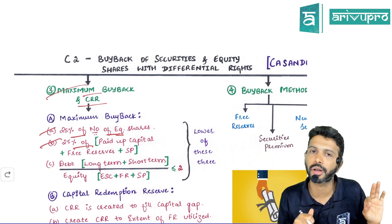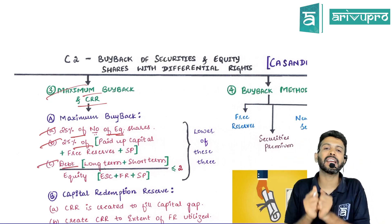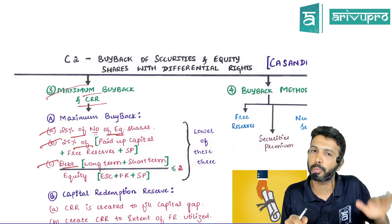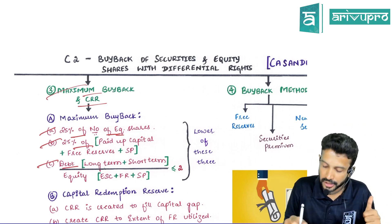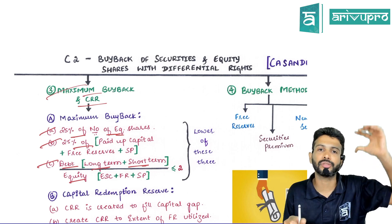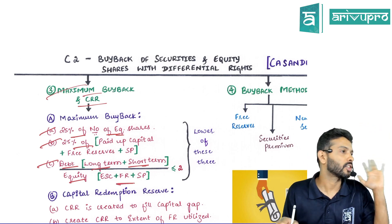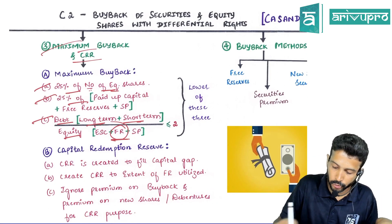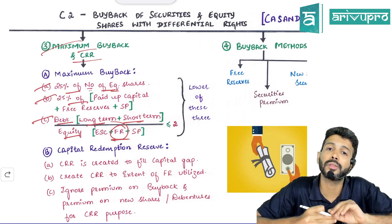The third is the debt-equity ratio test. Post-buyback, the debt-equity ratio should not exceed 2. Debt for this purpose includes both long-term and short-term debt. Equity includes paid-up equity share capital, free reserves, and securities premium. To find out this debt-equity ratio, we use the X method — assume the total face value of equity shares bought back is X, then substitute X in the equation to get its value.